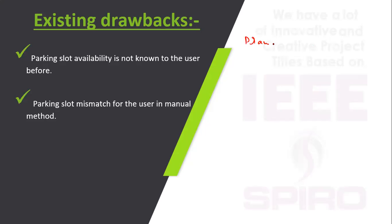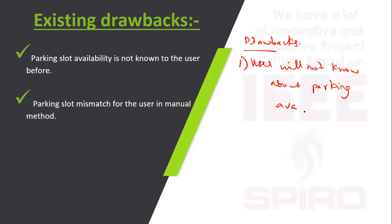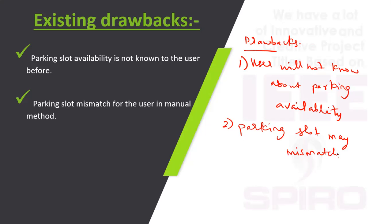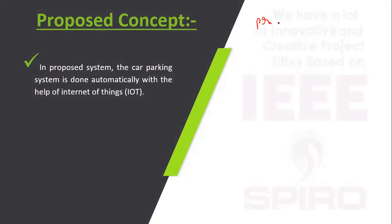Drawbacks of the existing system: the user will not know about parking availability, and parking slot may mismatch. To make a smart parking system using sensors, we will alert the person whether parking is available or not in public places like malls.